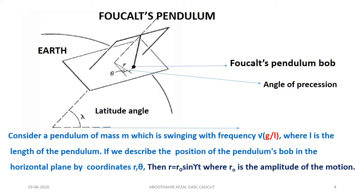This is the Foucault's Pendulum placed above the surface of the Earth at a particular latitude angle, lambda. You can see the Foucault's Pendulum hung at a particular position on the Earth's surface given by latitude angle lambda. As the Foucault's Pendulum is tilted, and due to the rotation of the Earth, there is a precession of the plane of oscillation. The change in the plane of oscillation is given by the angle of precession, theta.